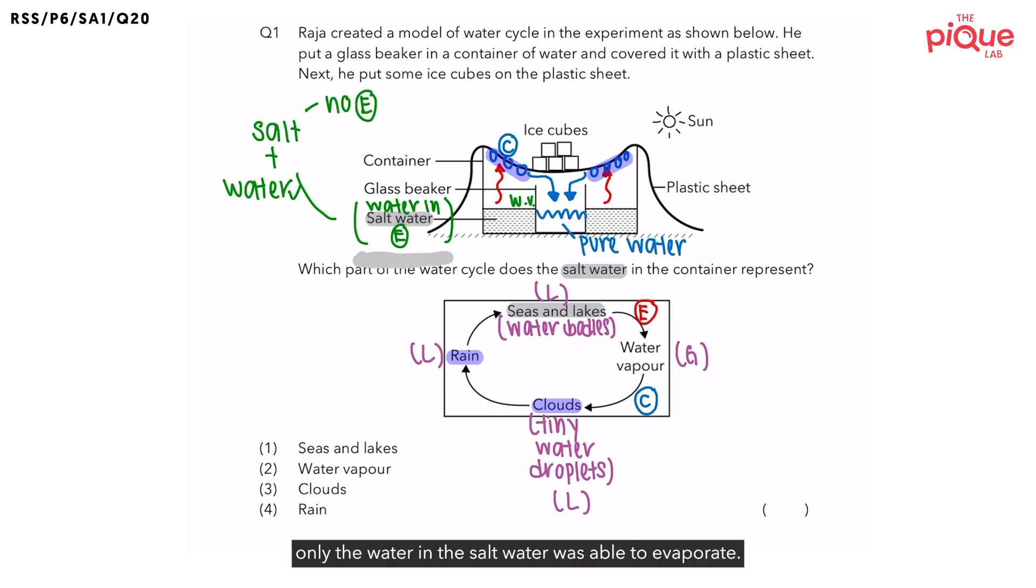Remember, only the water in the salt water was able to evaporate. So what's going to be collected in the glass beaker is pure water. And the salt is going to be left in the container beside the beaker.